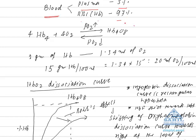Oxygen is mainly transported by uniting with hemoglobin. One molecule of hemoglobin contains four heme groups, and since one heme binds with one molecule of oxygen, one hemoglobin molecule combines with four molecules of oxygen to form a compound called oxyhemoglobin, Hb4O8.